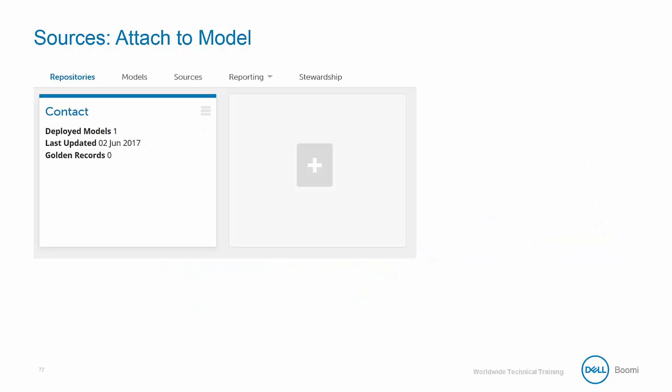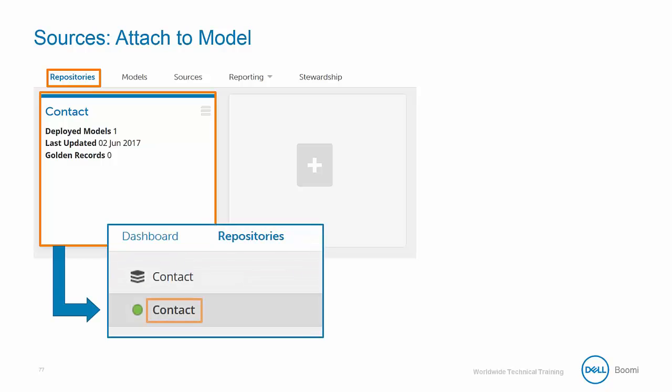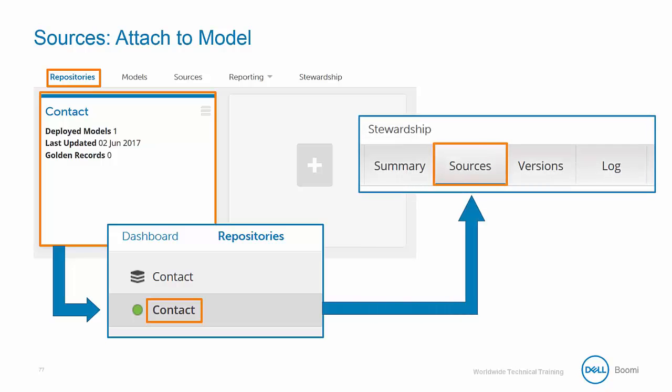Now that we've discussed how our sources will work within the business use case, let's take a look at how we can actually attach our sources to our contact model. It can be tricky navigating MDM at first due to its stacked structure. When attaching a source to a model, we need to go back to the repositories tab and enter the repository itself. Since we do not want to edit the model itself, but rather just attach the sources to the model, this is all done within the repository. The way we can get there is by clicking on the repository tab, then selecting the desired repository, and clicking on the contact model from the list on the left side of the screen. Finally, you can click on the sources sub-tab, which will take you to the desired screen.